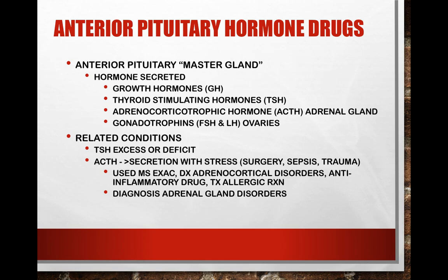The anterior pituitary can have related conditions associated with excess or deficit of certain hormones. For example, TSH — thyroid stimulating hormone — if there's too much circulating, that means the thyroid is not functioning enough, so the pituitary makes excess TSH because the thyroid isn't responding. If there's a deficit, we might have overactivity of the thyroid. This dichotomy is called the negative feedback system of hormones. Page 665 in your book discusses that negative feedback loop of the hypothalamus and the pituitary.